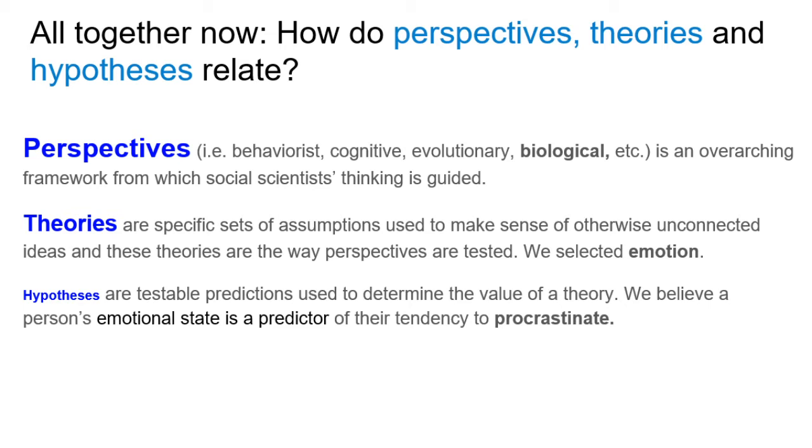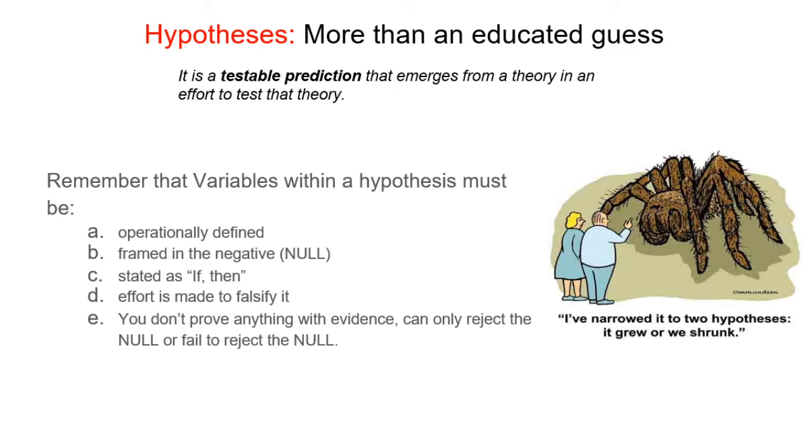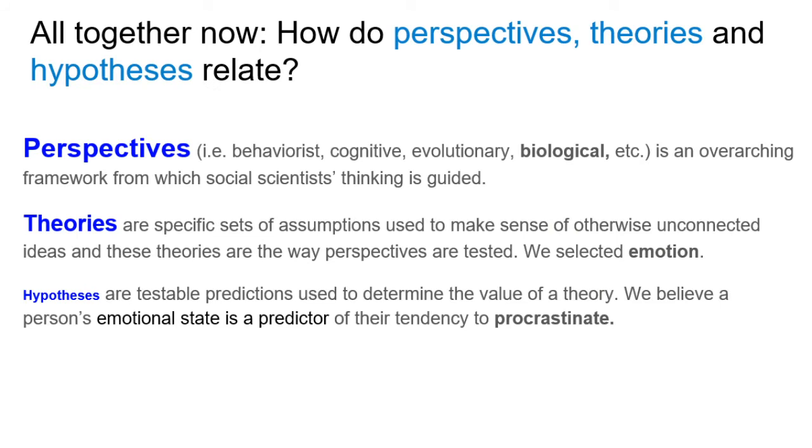Because emotion and even anxiety are pretty general terms, pretty abstract terms, we have to go a level further. We have to put the theory to the test, and this is where the hypothesis comes into play again. Hypotheses, again, are testable predictions used to determine the value of a theory. We believe a person's emotional state is a predictor of their tendency to procrastinate. Now, of course, if you remember, we're not going to actually write that hypothesis in that way. Remember, from B, we have to frame it in the null. So, let's try this again framed as a null. We believe that a person's emotional state is not a predictor of their tendency to procrastinate. Now, we will go from there to test this idea and try to falsify that null hypothesis.